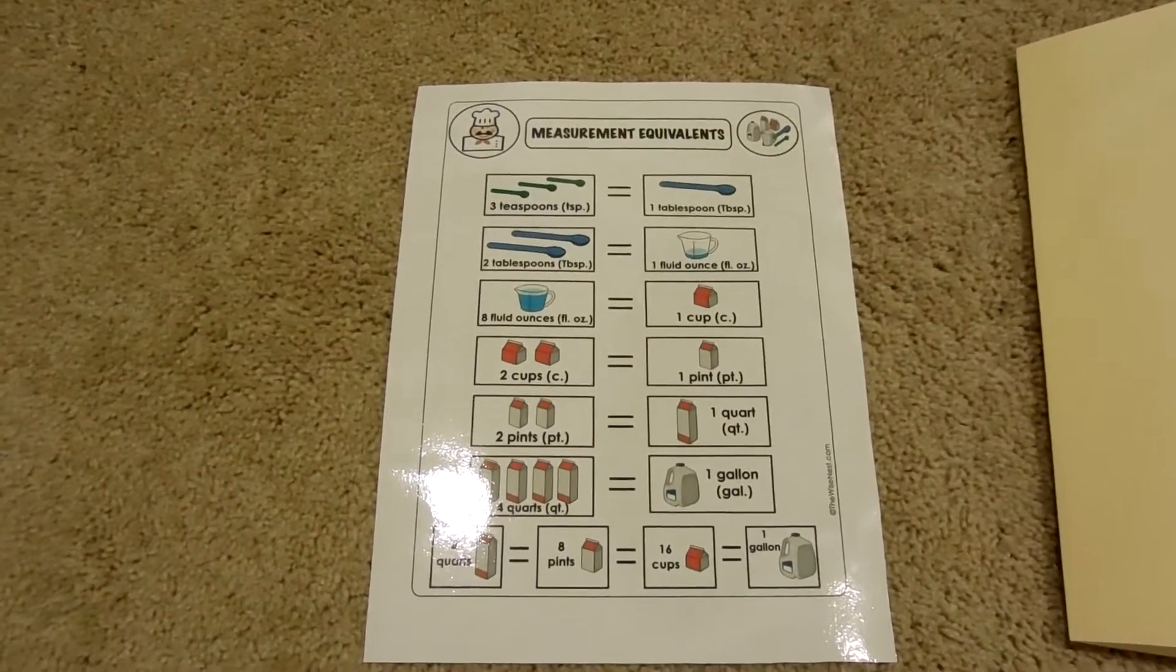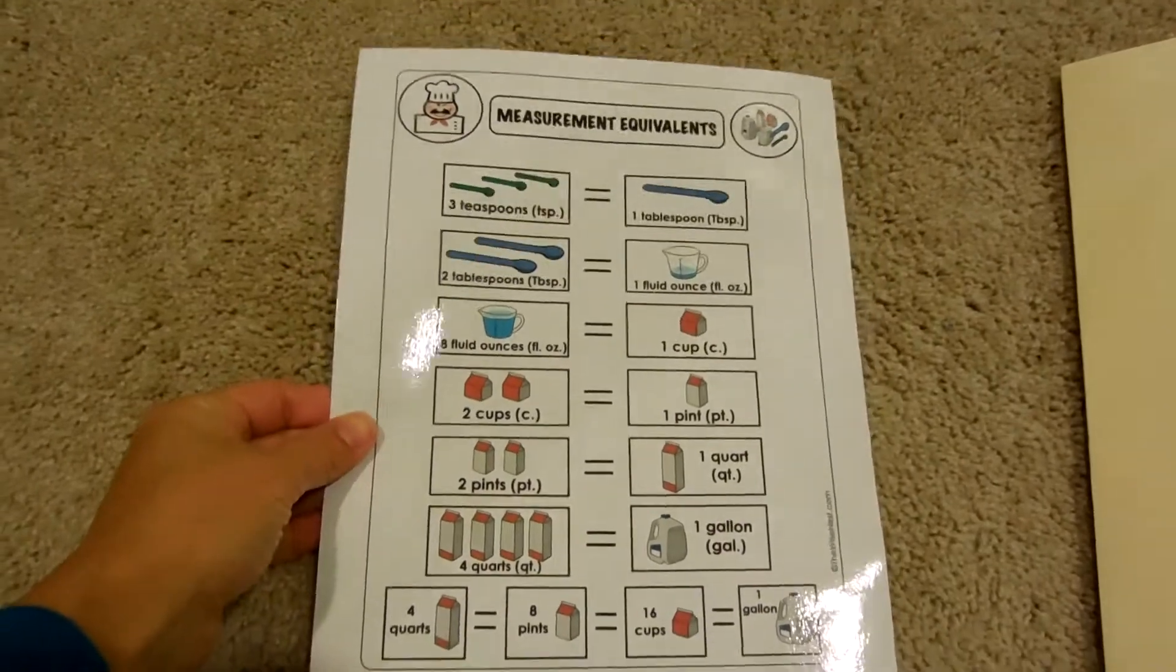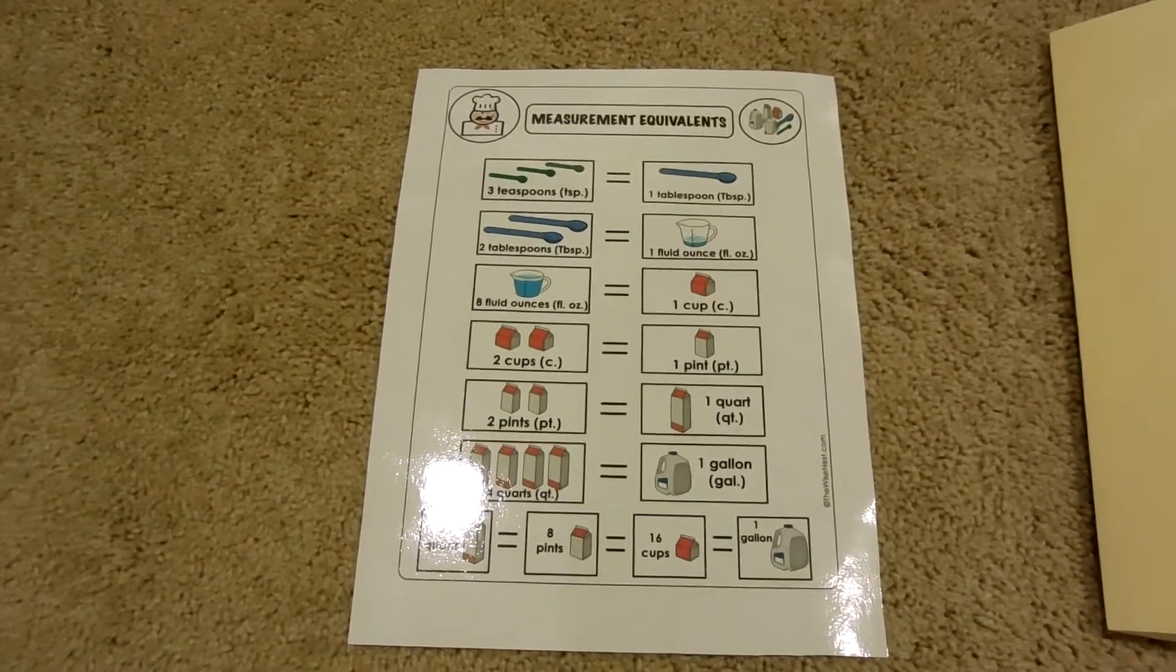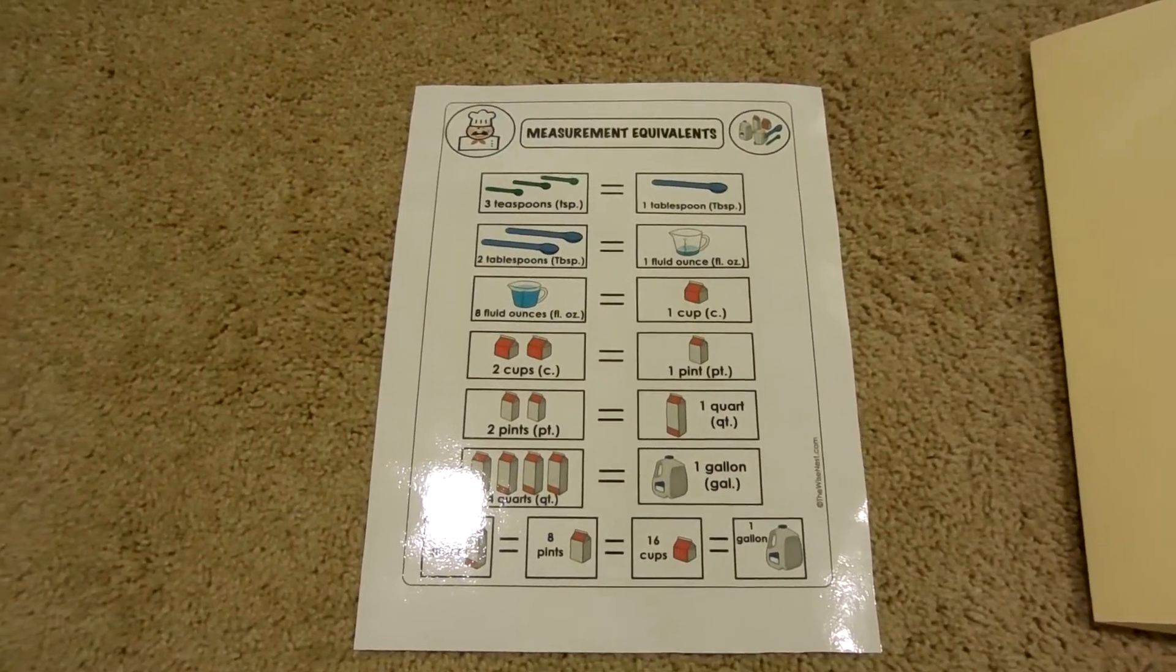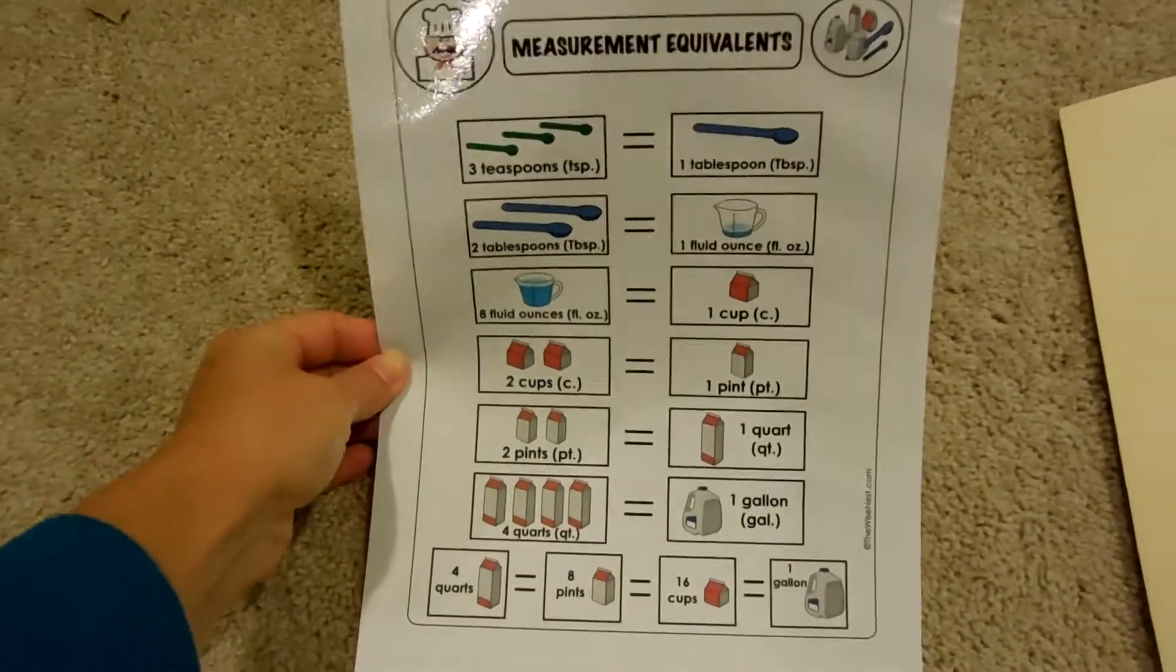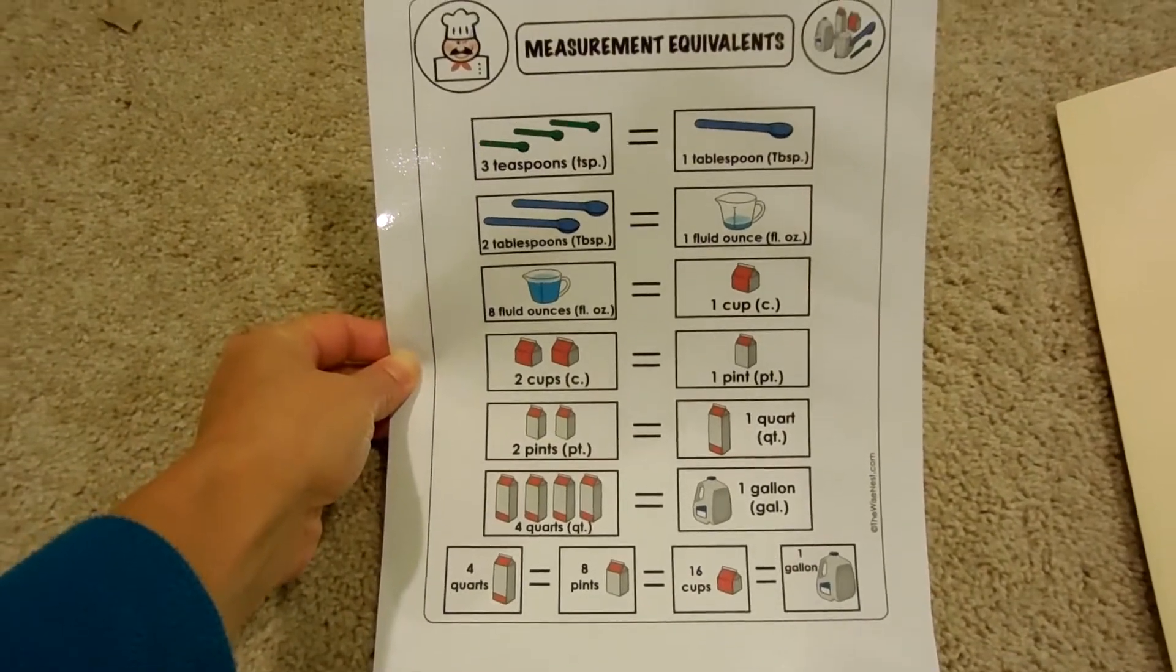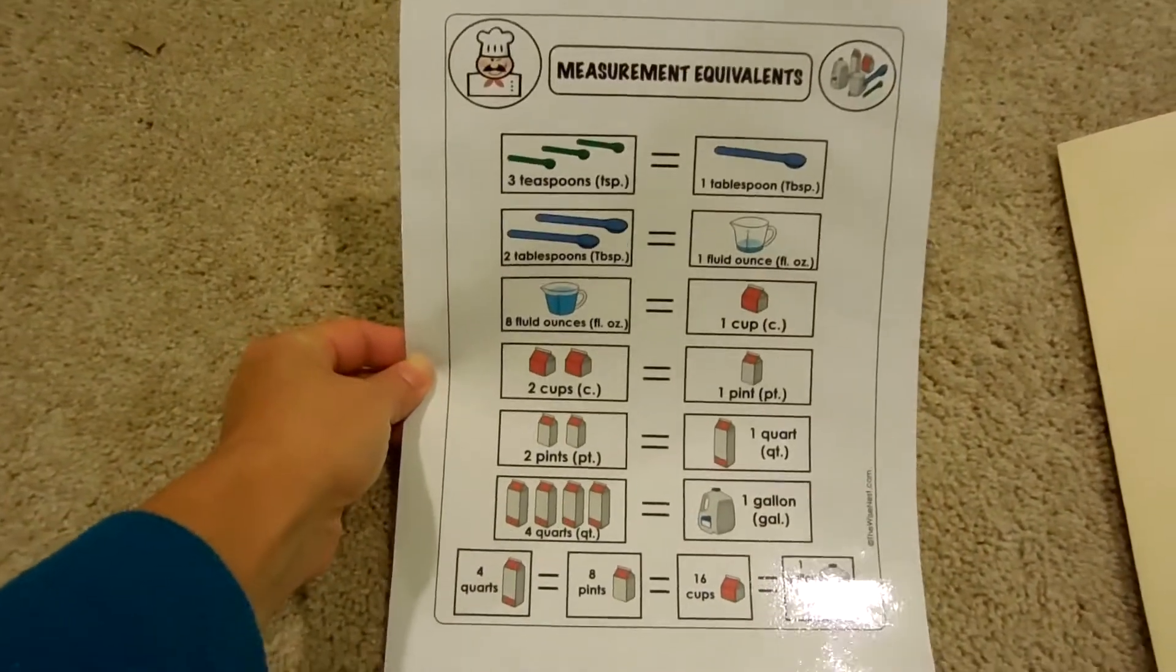Hi guys, I wanted to talk to you about the materials that are made for measurement equivalents. In the file you're going to find a lot of different things. The first thing you're going to find is this little poster that has all the different conversions and equivalents. You can use this one to hang on the wall and use it as a reference.